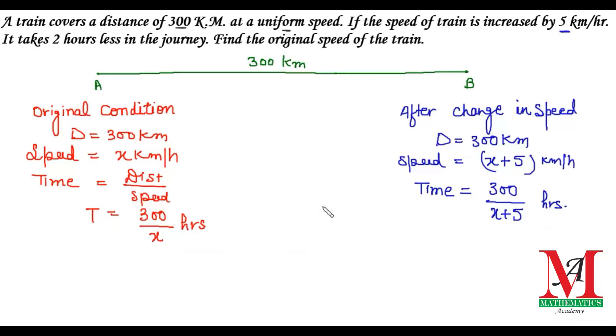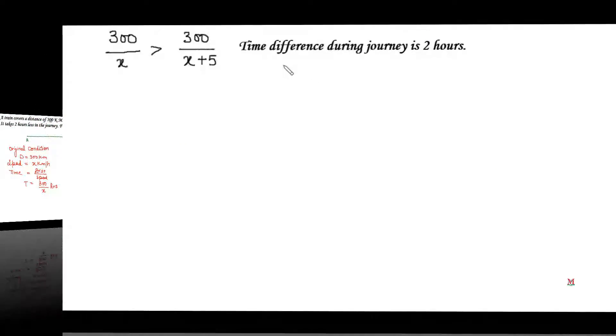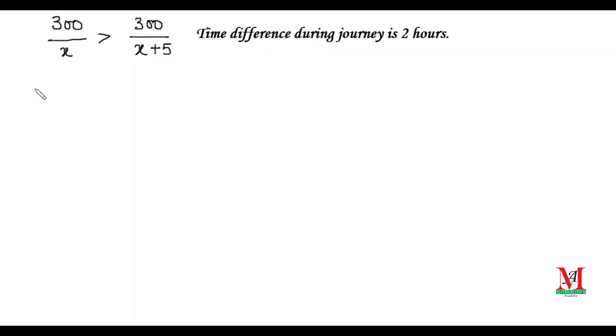The time taken after increasing the speed is less compared to the original. This means 300/x is greater than 300/(x+5). We see that the time difference during the journey is 2 hours. Therefore, the equation becomes 300/x - 300/(x+5) = 2. To simplify this equation, we take the LCM, which is x(x+5).